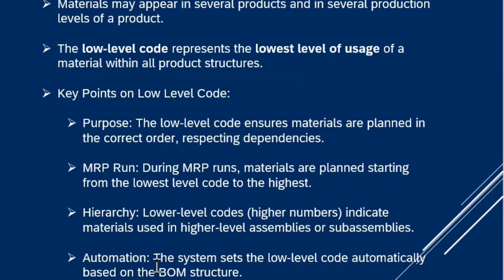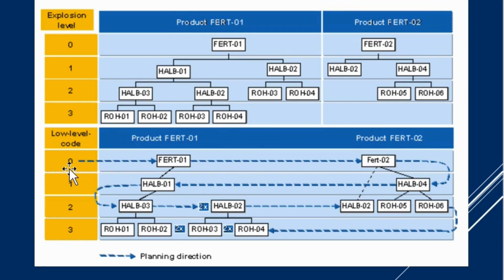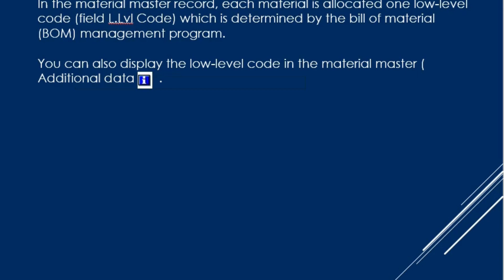Here is a simple example showing explosion levels. A finished product (FERT material) is at level zero, with a low level code of 000 in SAP. Below that, HALB materials are at level 001, then 002, then 003. During MRP Live, the system takes all materials at low level code 000 with a planning file entry and plans them first, then moves to level 001, then 002, then 003. This combination of planning file entry and low level code drives the planning sequence.